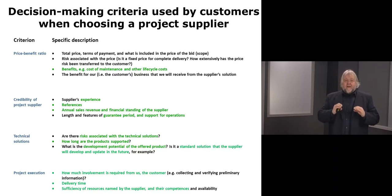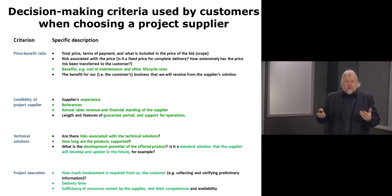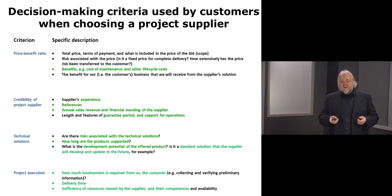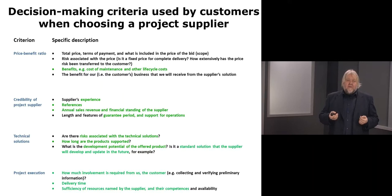The final criterion is project execution: how much involvement is required from us? If the supplier is a newcomer, they may need to learn our business and we may have to teach them before they can deliver their solution. Other considerations include delivery time, sufficiency of resources, and their competences. This is a generic list of four criteria a buyer uses when choosing a project supplier — there can be more criteria and this is not an exhaustive list.